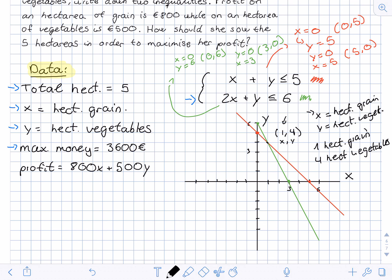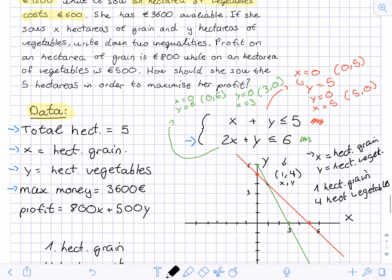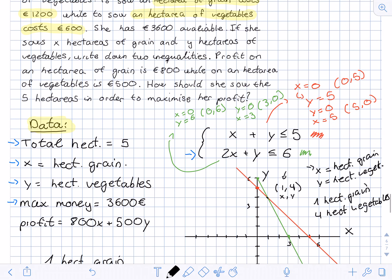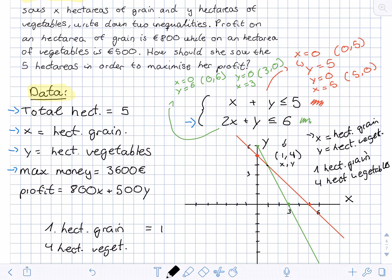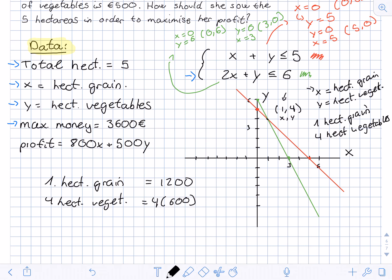Now we verify: one hectare of grain at 1200 euros, plus four hectares of vegetables at 600 euros each gives 4 × 600 = 2400, and 1200 + 2400 = 3600 euros. She spends all her money but doesn't exceed her budget, so the constraint is satisfied. This confirms one hectare of grain and four hectares of vegetables is the optimal solution to maximize profits.